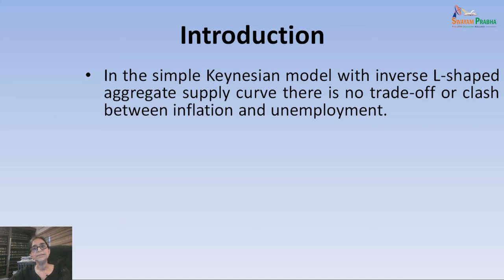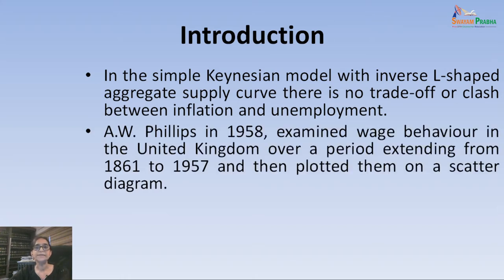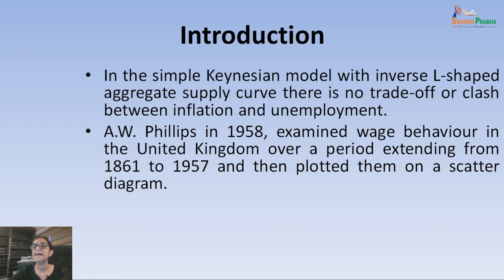In order to see whether this model actually operates or not, it was A.W. Phillips, who was associated with the London School of Economics, who tried to do an empirical research by taking data from the United Kingdom scattered over almost a 100-year period. He took data from the UK on nominal wage rates and unemployment rates from 1861 to 1957, plotted it on a graph, and got a scatter diagram.